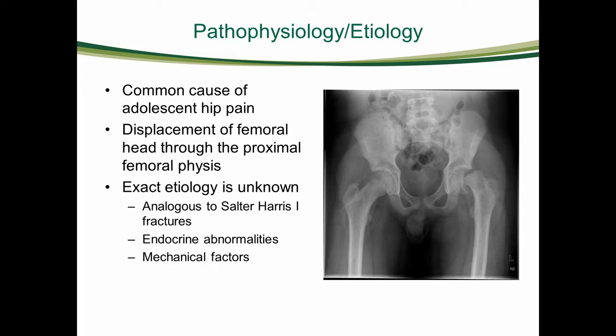The exact etiology of SCFE is unknown, but both biochemical and biomechanical factors likely play a role. These factors include obesity, femoral retroversion, increased physeal obliquity, puberty, and endocrinopathies such as hypothyroidism and hypogonadism. Following unilateral presentation, 10-20% will develop SCFE in the contralateral hip, generally within 18 months of the initial presentation.